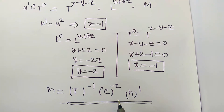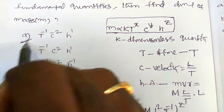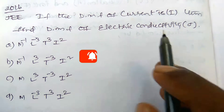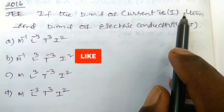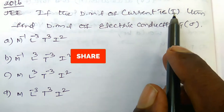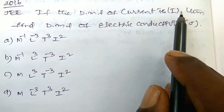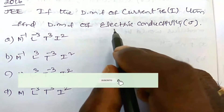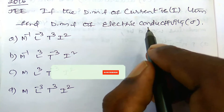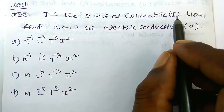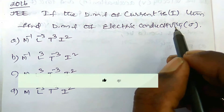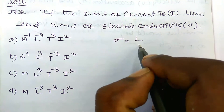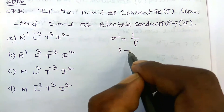Now substituting x = −1, y = −2, z = 1 back into the equation: m = t^(−1) · c^(−2) · h^1. So the dimensional formula for mass is t⁻¹·c⁻²·h¹. Checking against the options, option A is the correct answer. Now the next question — from 2016 JEE.